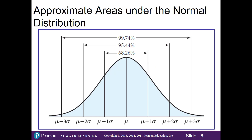Recall from Chapter 3 we learned about the empirical rule: within one standard deviation of our mean, 68% of our data falls. 95% of our data is within two standard deviations of the mean, and virtually all of our data is within three standard deviations of the mean. I say virtually because there is still a slim chance that we have some values outside of three standard deviations, and those are considered outliers.